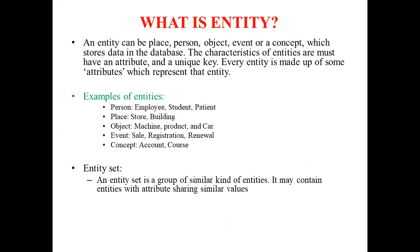The first component is an entity. What is an entity? A real-world thing, either living or non-living, that is easily recognizable and has its own independent existence is called an entity. It may be a place, person, object, or concept — anything. An entity set is a group of similar kinds of entities. For example, a person entity may include students, employees, or patients. An event entity relates to activities like sale, registration, or renewal. Objects like a machine, bench, car, or product are also entities — anything which has its own specialized feature is called an entity. An entity set may contain entities with attributes sharing similar values.